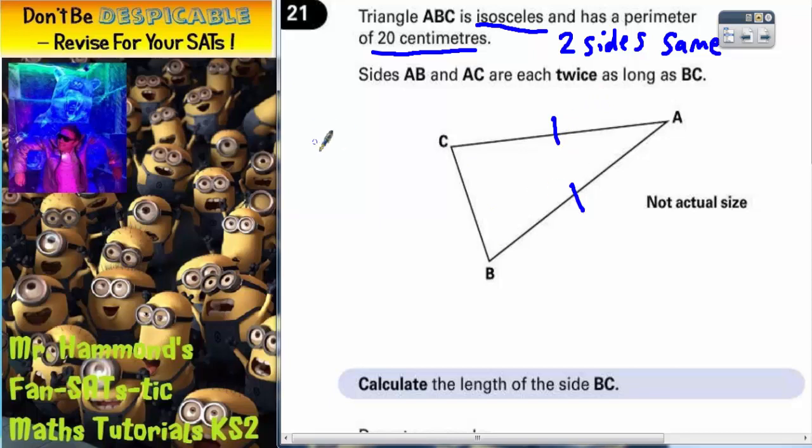So the easiest thing to do next is to do a little table. So we've got sides AB, AC, and BC.